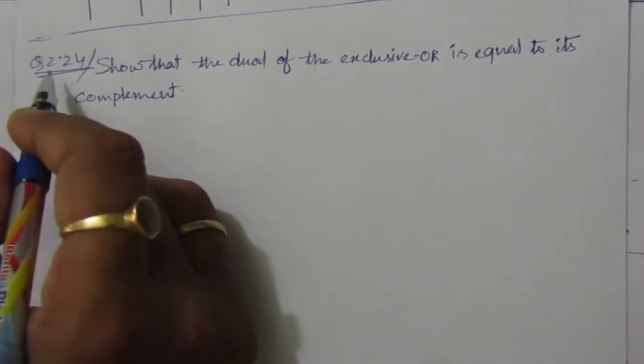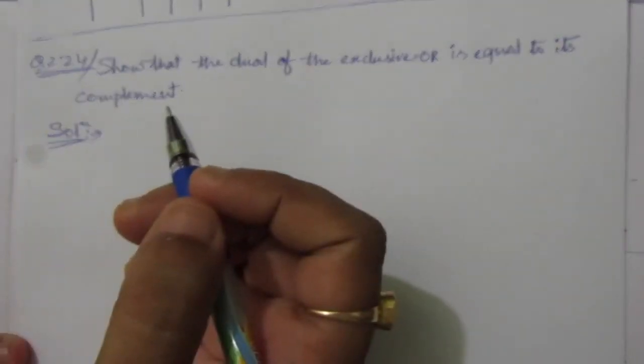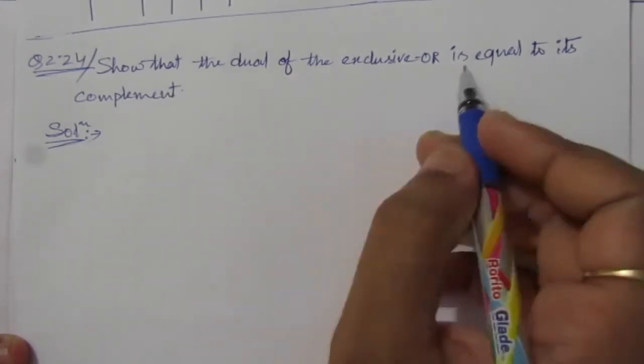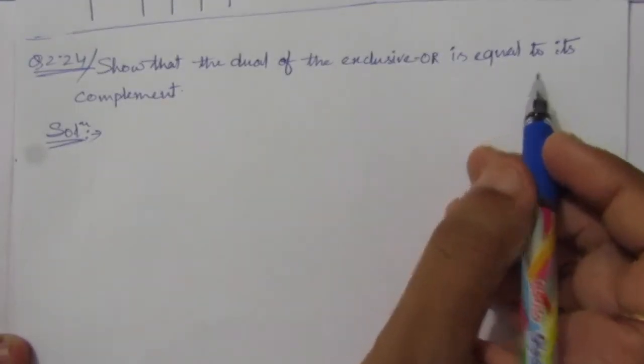So in this video, I am solving problem number 2.24 from chapter number 2. The problem is to show that the dual of the exclusive OR is equal to its complement.